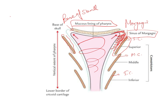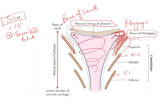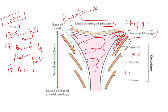The sinus of Morgagni is the space between the base of the skull and the superior pharyngeal constrictor. A question is often asked about the structures that pass through the sinus of Morgagni. These include: the Eustachian tube, the tensor veli palatini, the ascending pharyngeal artery, and the ascending palatine artery.